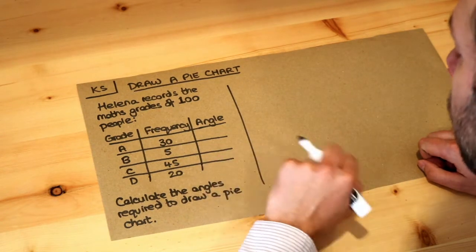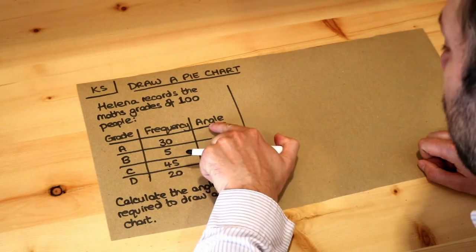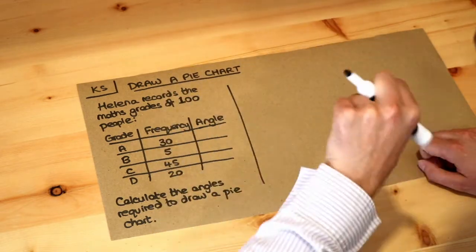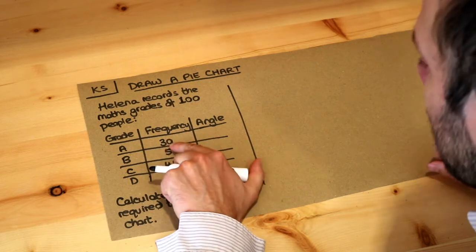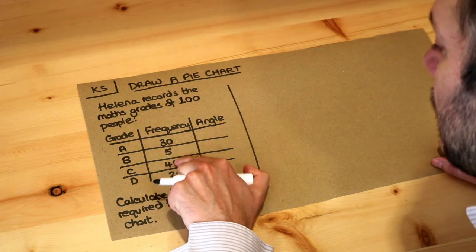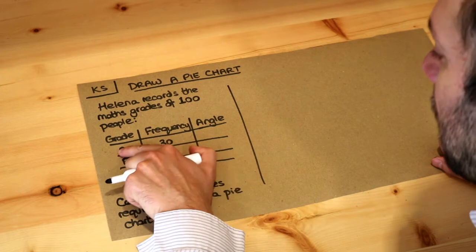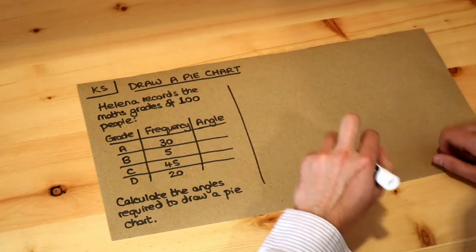Before when we had the angles, I got you to find what fraction is the angle of the total angle of 360 degrees. This time we got the frequency and we're going to do a similar thing. We want to find what fraction is each of these frequencies, the number of people with each grade, what fraction is it of all the people.